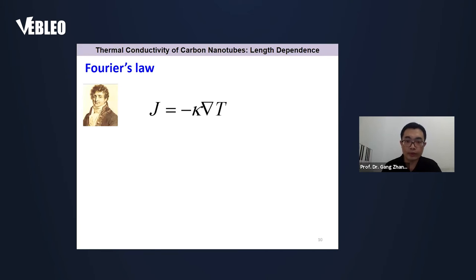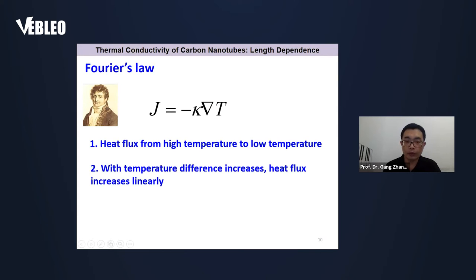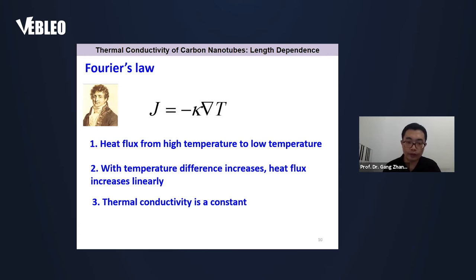We use Fourier's law to describe the thermal conductivity of materials. Here, Q is the heat flux, T is the temperature, this is the temperature gradient, and kappa is the thermal conductivity. Fourier's law tells us: first, heat flux flows from high temperature to low temperature. Second, with temperature difference increase, heat flux increases. And for bulk materials, thermal conductivity is a constant — independent of the size of the materials. This is what Fourier's law tells us, and in the past 200 years we have believed that the thermal conductivity of bulk materials is a size-independent constant.